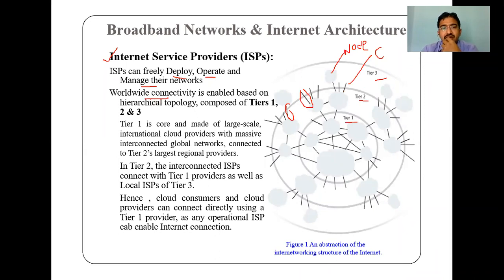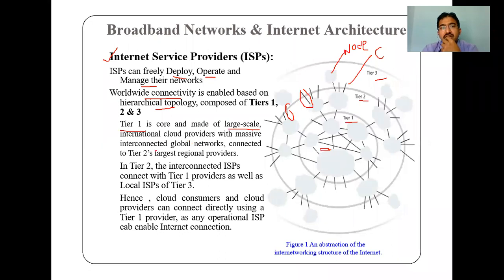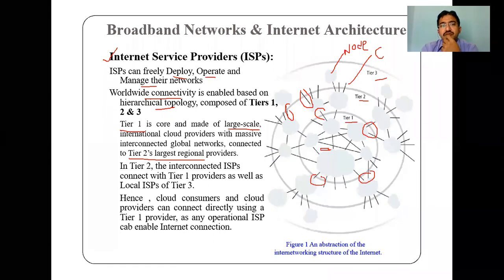Tier one is the core, made of large-scale international cloud providers with massive interconnected global networks. These are connected to tier two. So it is international cloud providers with massive interconnected global networks connected to tier two — not just regional providers. From tier one, connections go to tier two — from worldwide to countrywide, countrywide to statewide, statewide to district-wide.